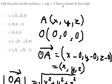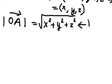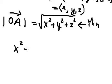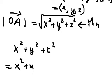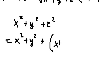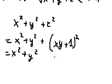Now the question wants us to find the closest point. That means this one should be about the minimum. So I will focus on x squared plus y squared plus z squared. And we know that z is about this one. Now we need to expand this one.